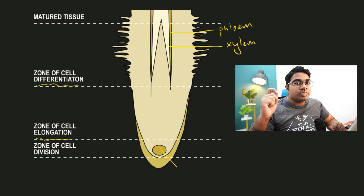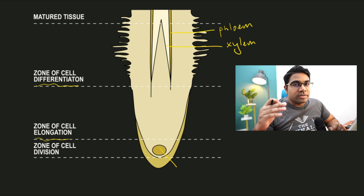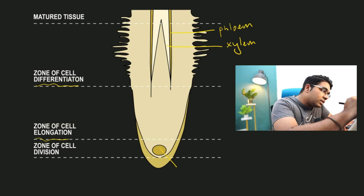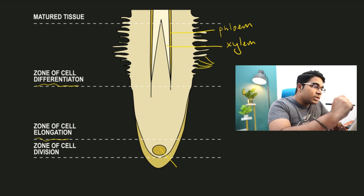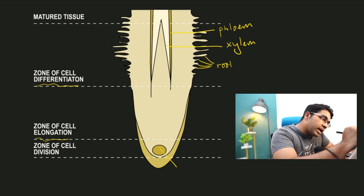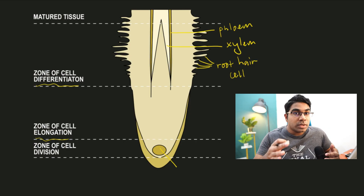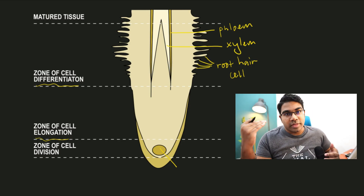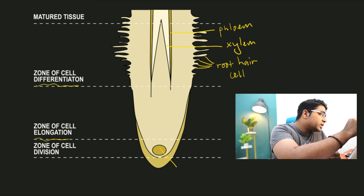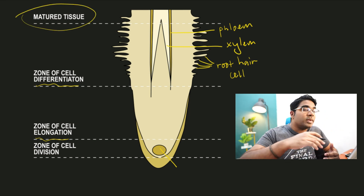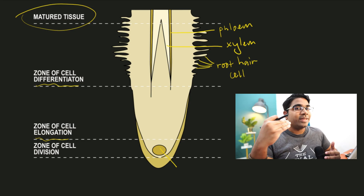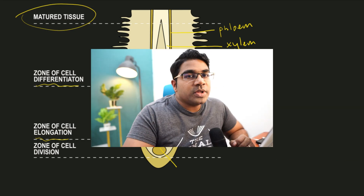There is one extra specialized cell visible in the root: the root hair cell — all these cells that are sticking out. The root hair cell greatly increases the surface area for absorption of water from the soil. Once all the cells in the zone of cell differentiation have fully differentiated, they become mature tissue — the permanent tissue in the roots of the plant.